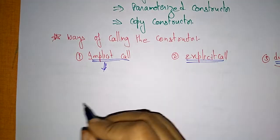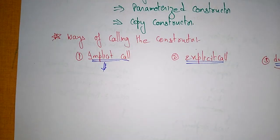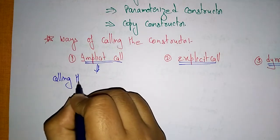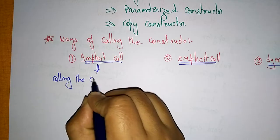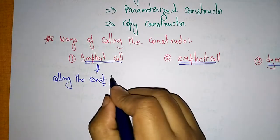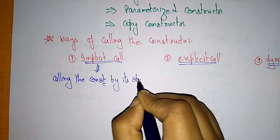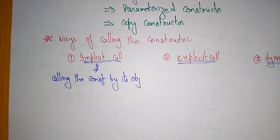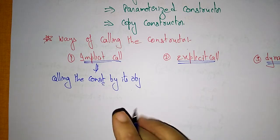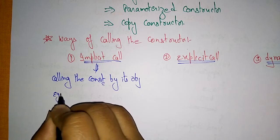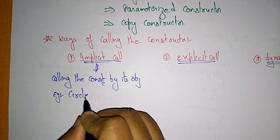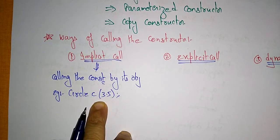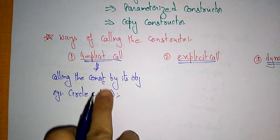Implicit call means calling the constructor by its object. We do not specify the constructor name here — we are simply calling the constructor by its object. For example: implicit call is written as `circle c(3.5)` — here I am just entering the value directly.